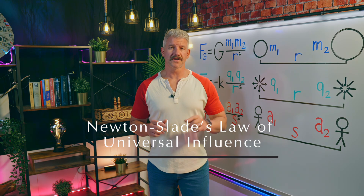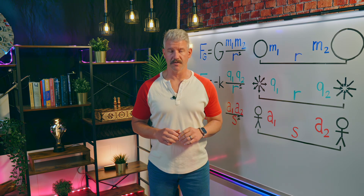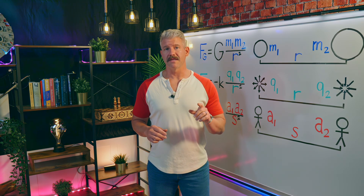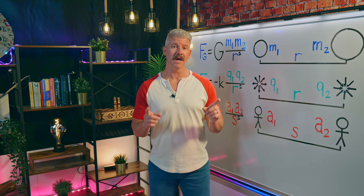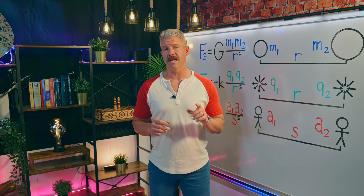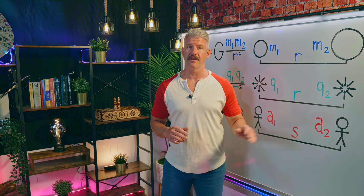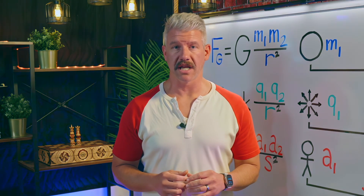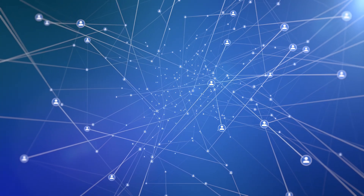Newton-Slade's Law of Universal Influence describes the anthropoidal force between two people anywhere in the anthropic domain. Developed in 2022 by Colin Slade, this law combines the inverse square law with the concept of sociosexual market value and Dunbar layers to propose that the influence between two people is directly proportional to the product of their extrinsic values and inversely proportional to the square of the distance between them. This law provides a quantitative framework for understanding human interaction, aiding the study, design, and manufacture of tactics, techniques, and procedures for the anthropic domain.